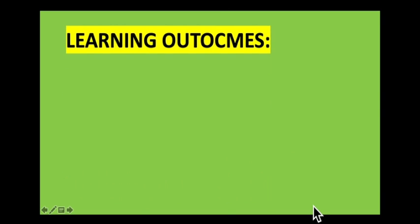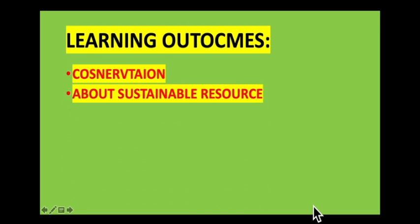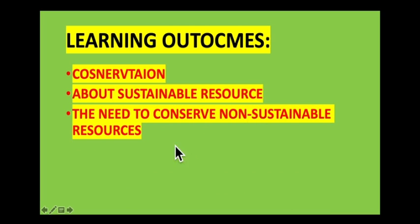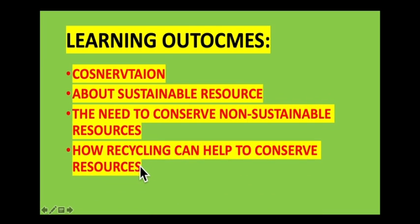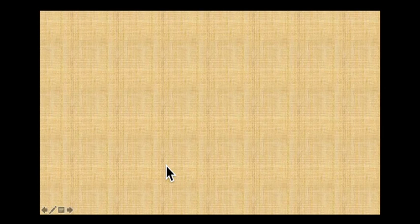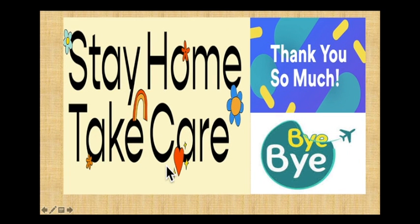At the end of the lecture, you should be able to understand conservation - the process of looking after the natural environment. We discussed sustainable resources that we can use again and again without running out, and the need to conserve non-sustainable resources. We also discussed how recycling can help conserve resources like fossil fuels and important metals. This is all about the conservation topic - I hope you understood it well. Thank you so much, take care, bye bye.